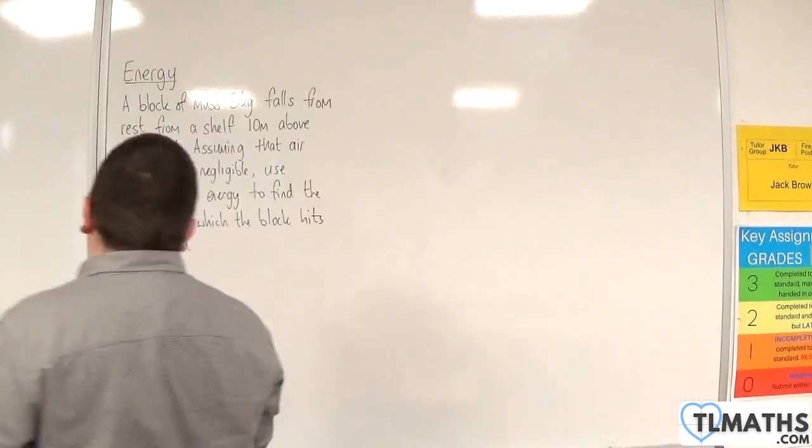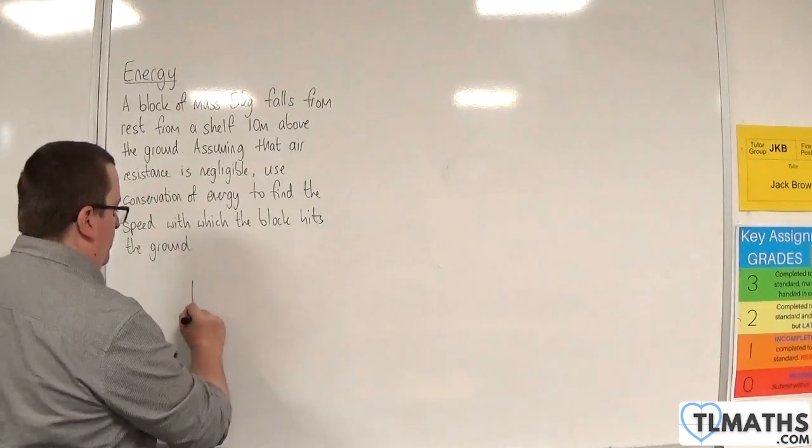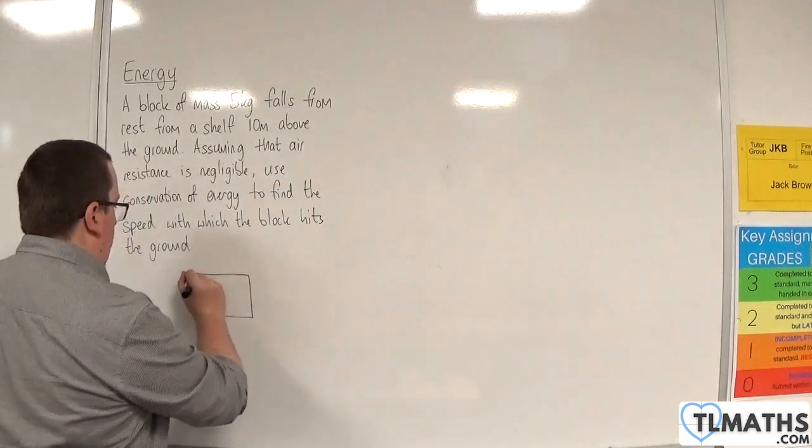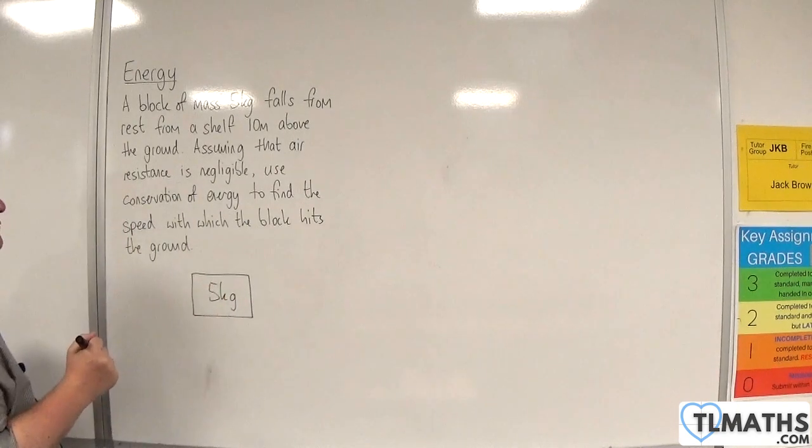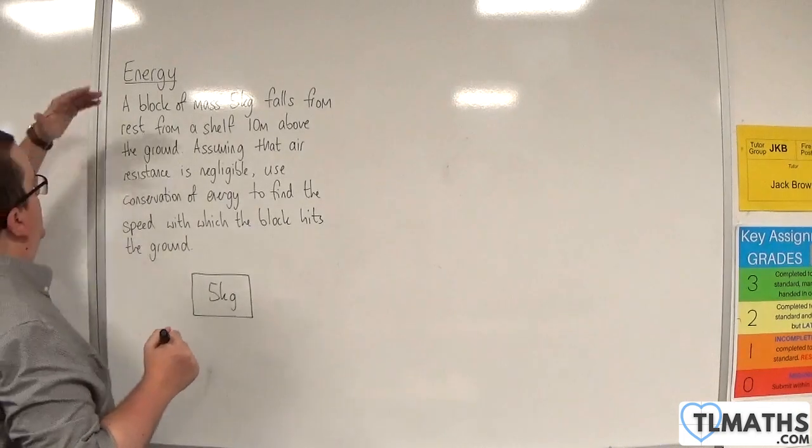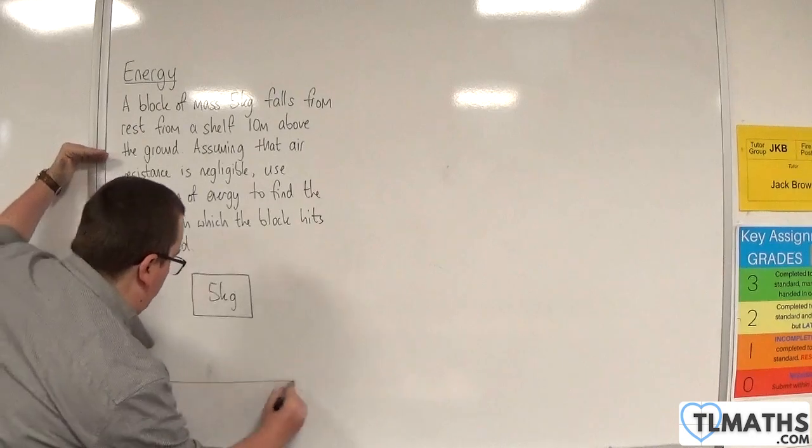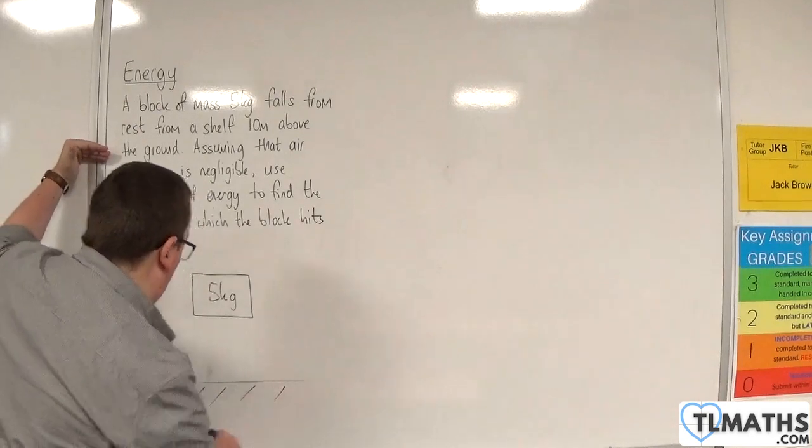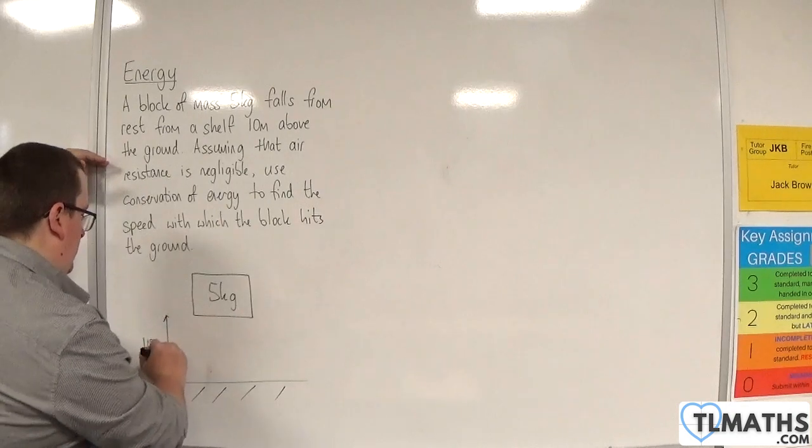Okay, so let's draw a diagram just so we can see what's going on. So here's our block with a mass of 5 kilos. And it falls from rest from a shelf 10 metres above the ground. Right, so here is the ground, and that distance is 10 metres.